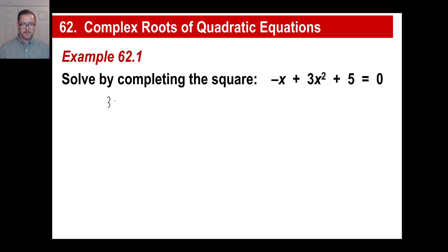Okay, yeah, you're right. That's it. 3x squared minus x plus 5 equals 0. Okay, all right.